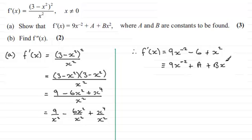And we've got to say what A and B are. So I'll just say where A is equal to -6, and B, well that's going to be equal to 1. We've got 1x² there.